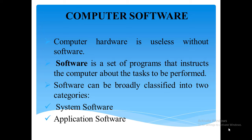So how can we define software? A software is a set of programs that instructs the computer about the task to be performed. Software tells the computer how the tasks are to be performed, or how the hardware carries out those tasks.